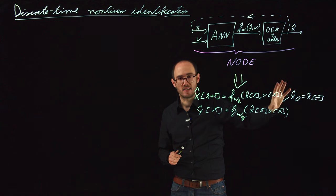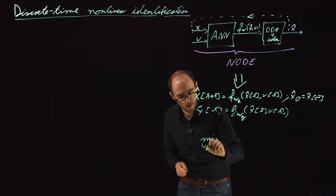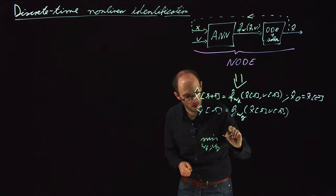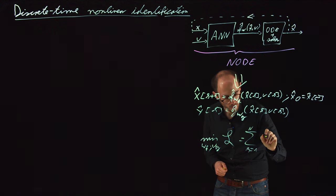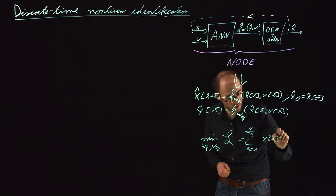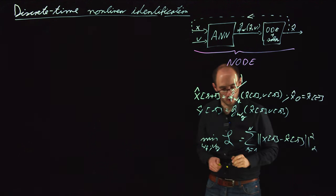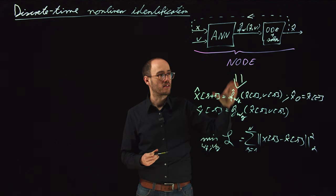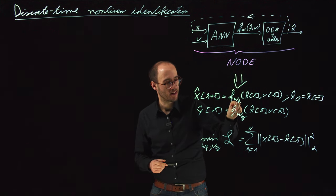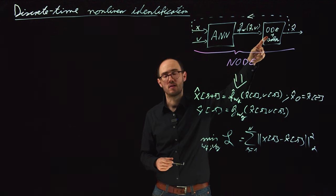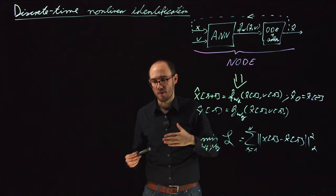And based on this discrete time representation of the model, we can define our usual loss function. So min w_f w_g, some loss function being the sum k equals 1 to n of x of k minus x hat of k for some mean squared error loss. And that is basically just a direct representation of the NODE approach in discrete time. And as we directly look for this f hat and this g hat, which is now defined in discrete time, we do not need the ODE representation or the ODE solver, which can have, I don't say it must, but which can have in certain applications advantages.